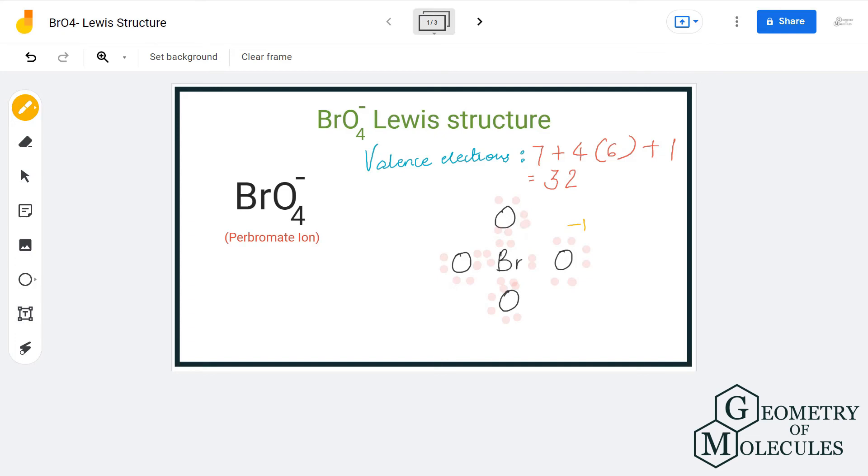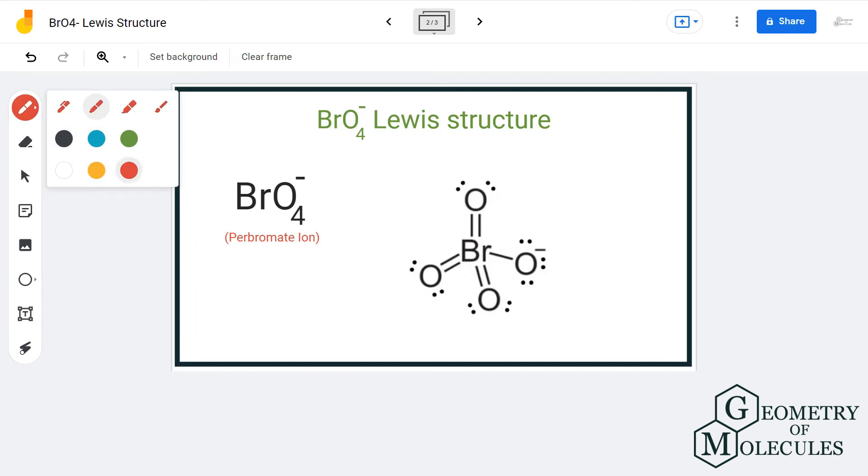So because of the formal charges and because of the arrangement, we are going to place these two electron pairs between these three oxygen and bromine atoms. So this is a Lewis structure of perbromate ion. And do not forget to include brackets and mention its charge. Always remember to mention charges and include brackets whenever you are writing Lewis structures for ions.